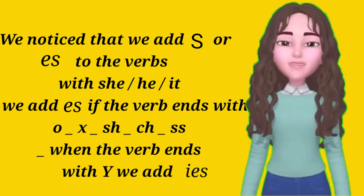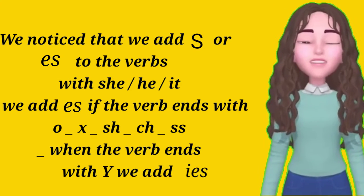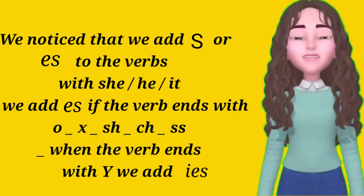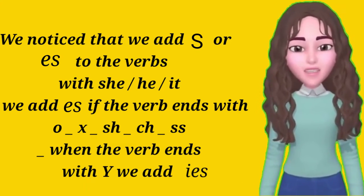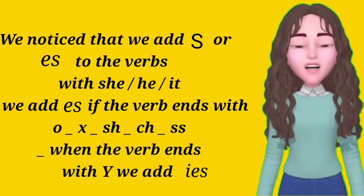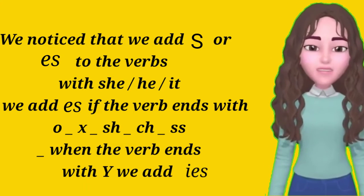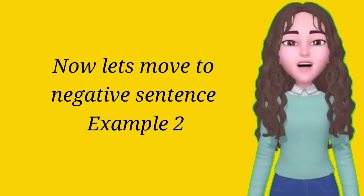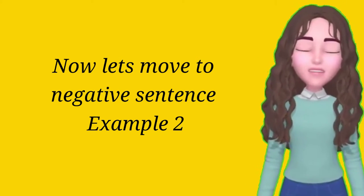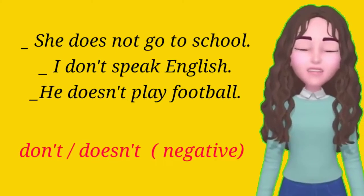With she, he, it — we add -es if the verb ends with o, x, sh, ch, or ss. When the verb ends with y, we change y to -ies.